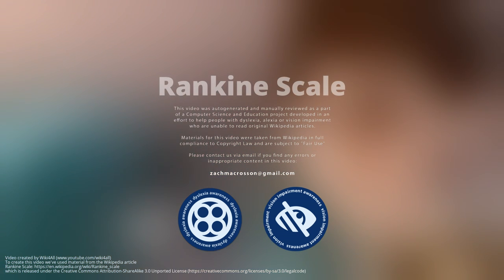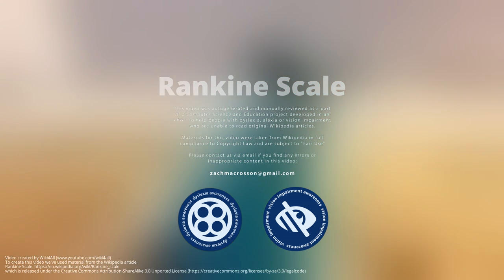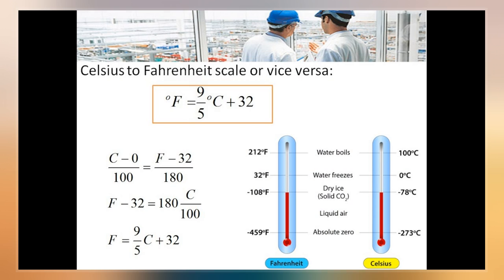The Rankine Scale is an absolute scale of thermodynamic temperature named after the University of Glasgow engineer and physicist McCorn Rankine, who proposed it in 1859.